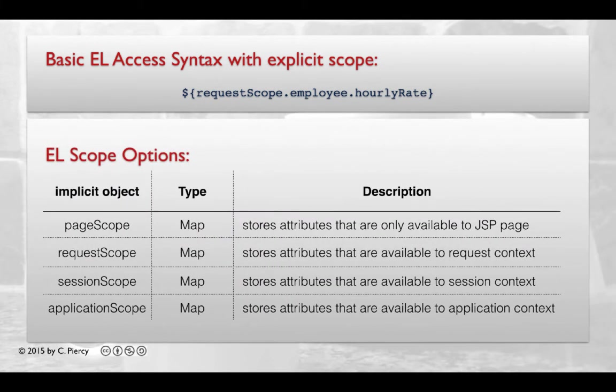Now there are four possibilities for the scope. These are all accessed by accessing some of the implicit objects that are available to us with our JSP and the expression language.